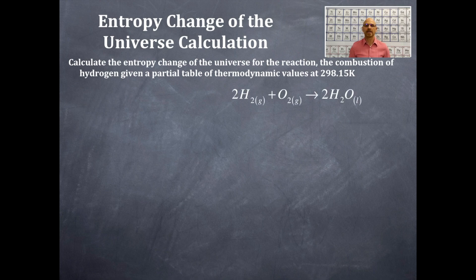So here is the balanced equation: two moles of hydrogen gas plus one mole of oxygen gas produces two moles of liquid water.